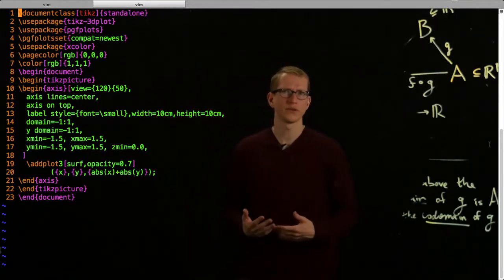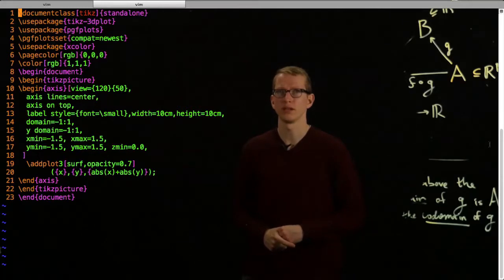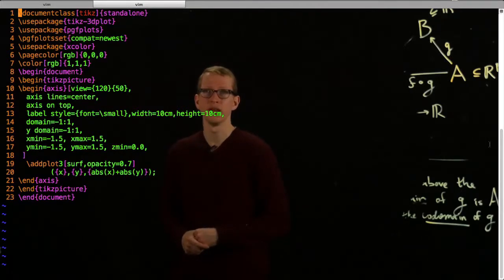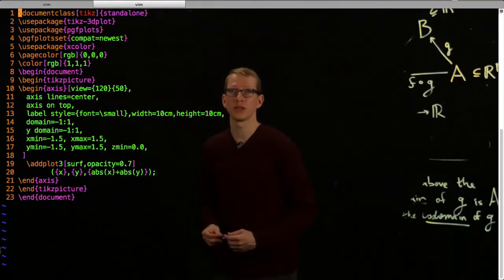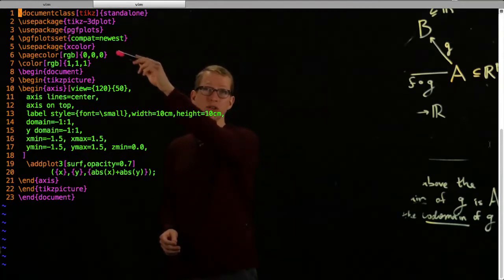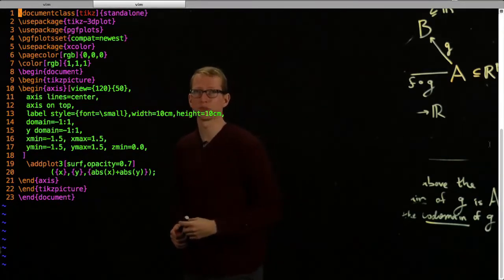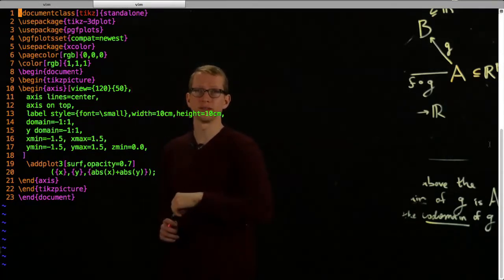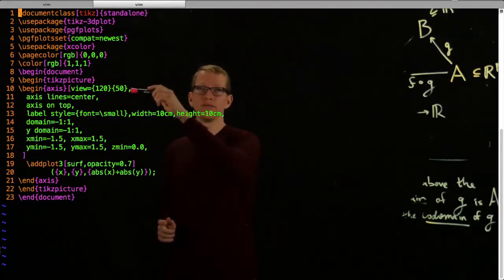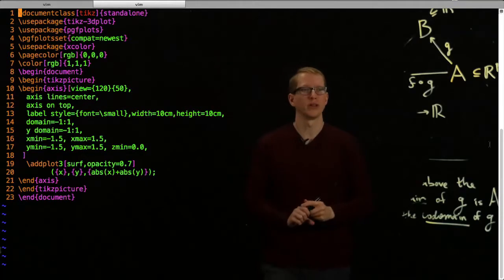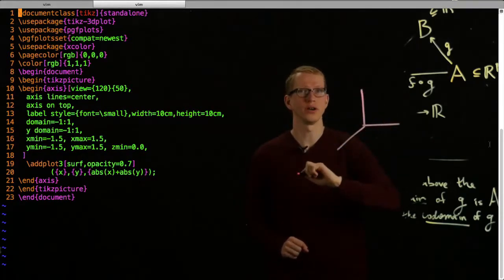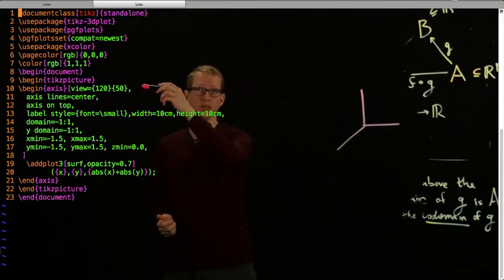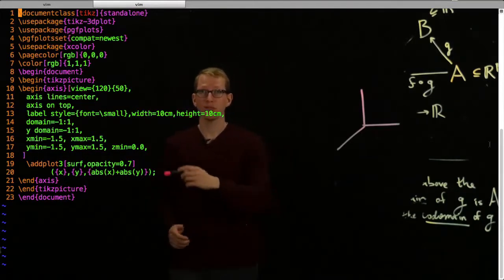We're going to set the compatibility for the newest, just so that it's using the properly updated information for making the plots. As usual, we'll begin the TikZ picture. We'll begin the document. We'll begin the TikZ picture. These colors are just so that it matches with the background of the video, so that it's black and green. Or actually here I've set the color to white. We're going to begin our axis, and view is going to be setting sort of what kind of view do we want. Whenever we draw an axis, it's a little arbitrary how we draw x, y, and z. Maybe I can tilt this and look at it from a different angle. This is what's going to set what sort of angle we're looking at it from.